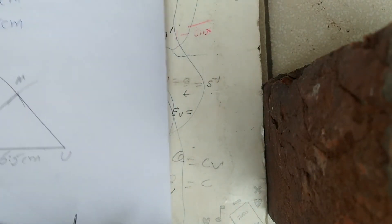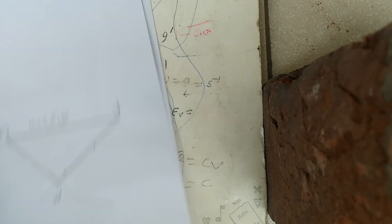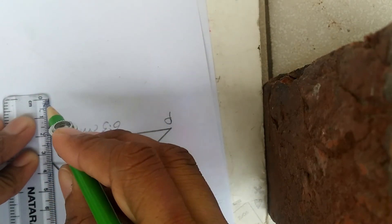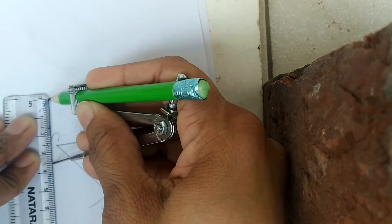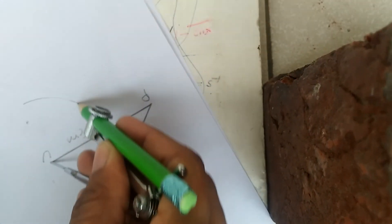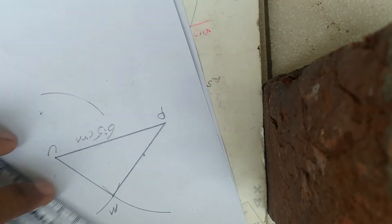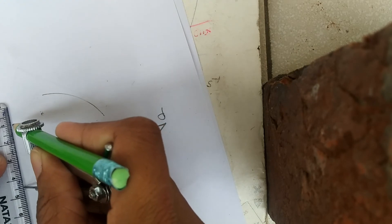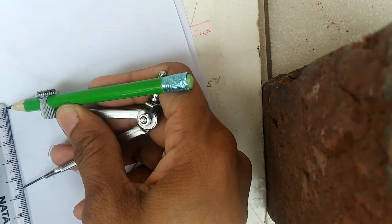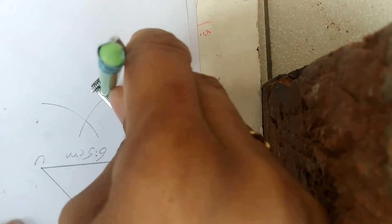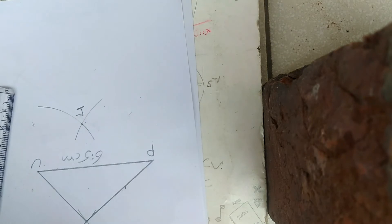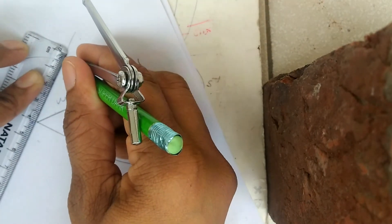Aise hi ab J ke liye dekhiye — JU = 3.5 cm. 3.5 cm ka compass open karke U ko center manke ek arc laga denge. Yeh hamara 3.5 cm compass ho gaya, U ko center manke arc laga denge. Ab PJ kitna hai — 4.5 cm. 4.5 cm ka compass open karenge, P ko center manke pehle wali arc ko cut karenge. Jahan yeh dono arcs intersect hoti hain — aa gaya hamara J. J se U ko join karenge. Join J-U and J-P.